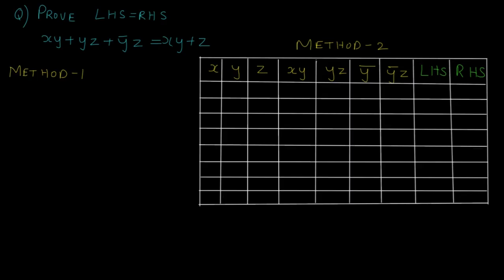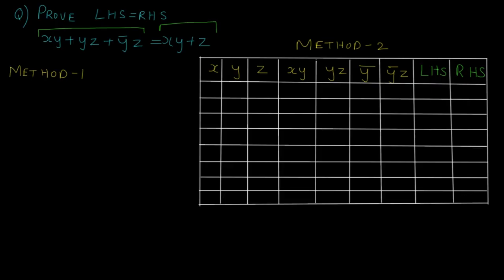As you can see on the screen, I've been given a question where I have to prove LHS is equal to RHS. In the first method, we either start with the LHS or RHS and apply boolean algebraic laws till we reach the other side. Note that in some cases LHS is not equal to RHS, so it can be a trick question. You need to decide carefully which side to start — usually start with the side that has more variables or complex functions. In this case, LHS is larger with more variables, so I'll start with the LHS.